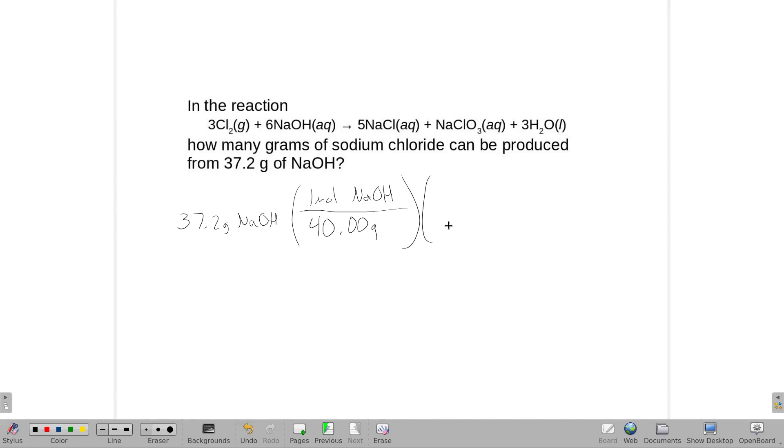Our balanced equation shows us that there are six NaOHs to give us five sodium chlorides. And then one mole of NaCl,